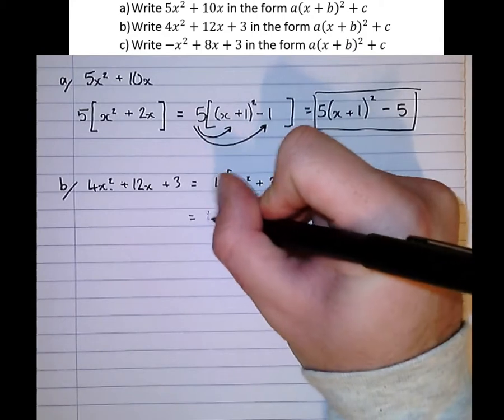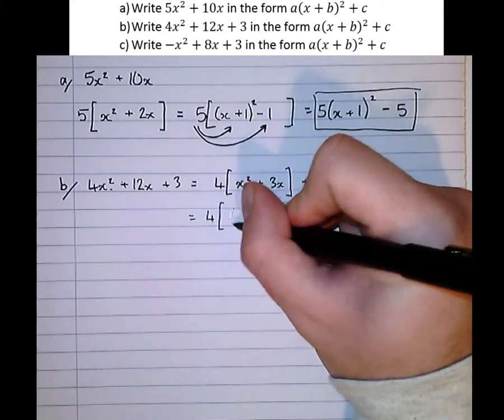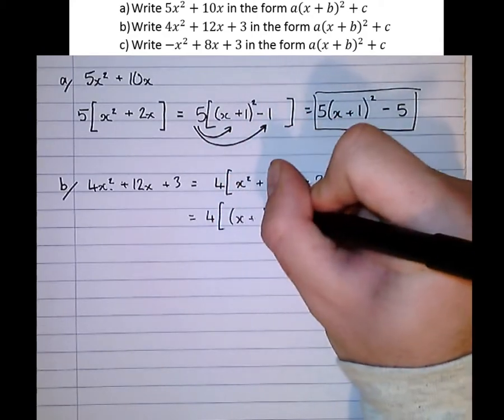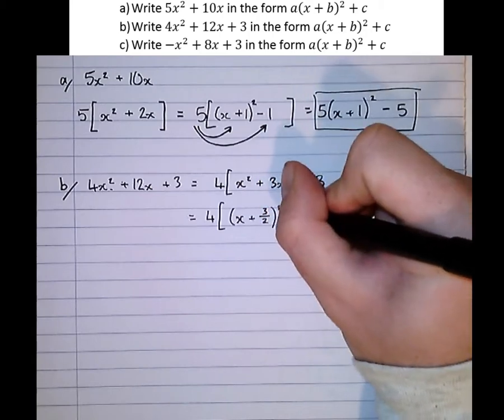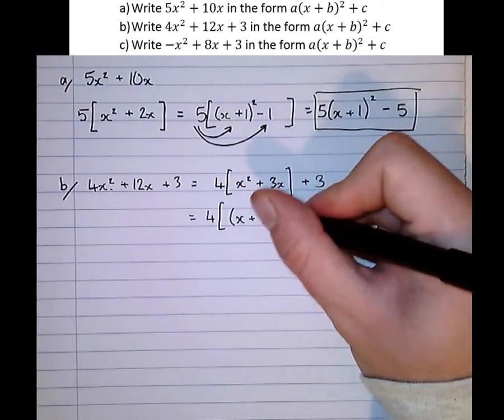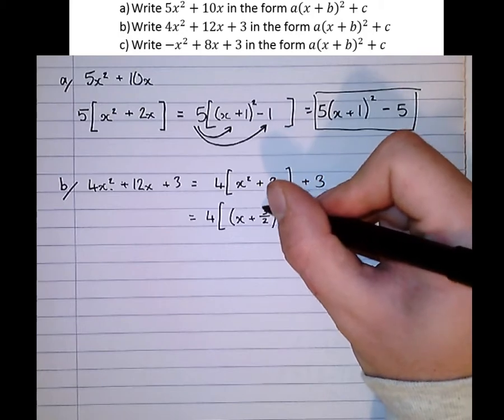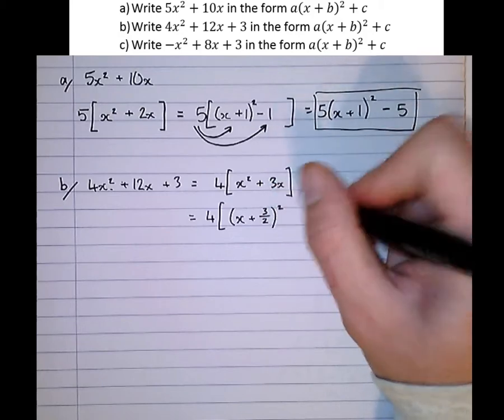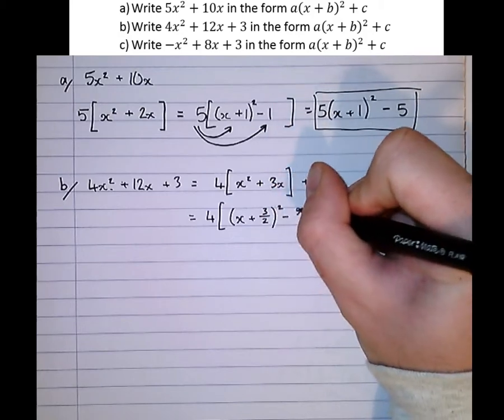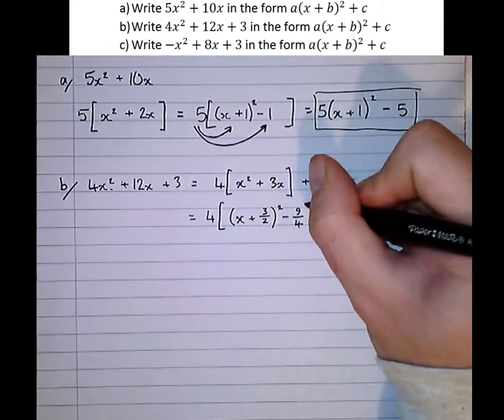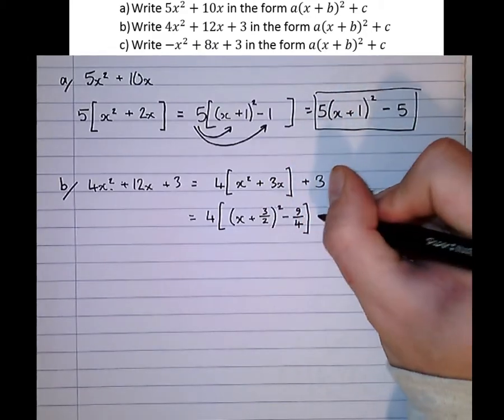Let's complete the square. x plus half of 3 is 3 over 2, squared. And when we multiply these brackets out, the extra bit we're going to get is this 3 over 2 squared. So the top squared is 9 over 4, close bracket plus 3.